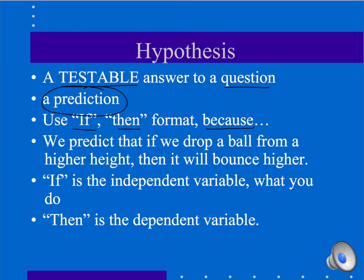We might predict if we drop a ball from a higher height, then it will bounce higher. The if portion of our hypothesis is what you're going to do. If I drop a ball from a higher height. Basically, that's what I'm going to test, that's what I'm changing as a scientist. It's my independent variable. I might drop the ball from 5 feet high, 10 feet high, and 20 feet high.